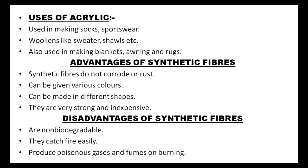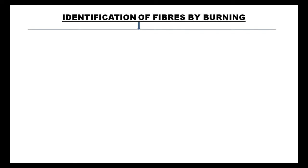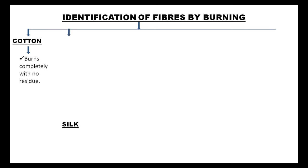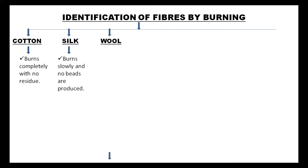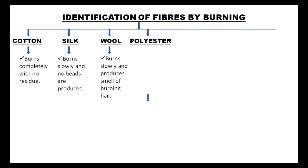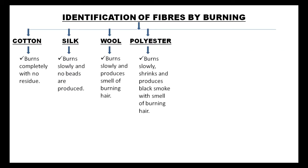Identification of fibers by burning. Cotton burns completely with no residue. Silk burns slowly and no beads are produced. Wool burns slowly and produces smell of burning hair. Polyester burns slowly, shrinks and produces black smoke with smell of burning hair. Rayon burns quickly and produces smell of burning paper.